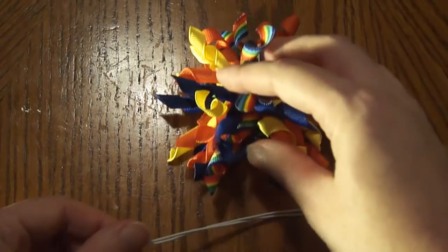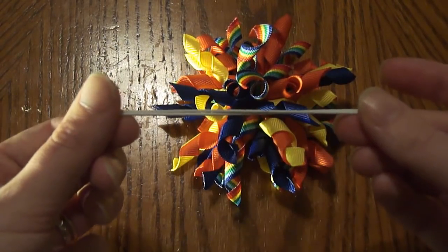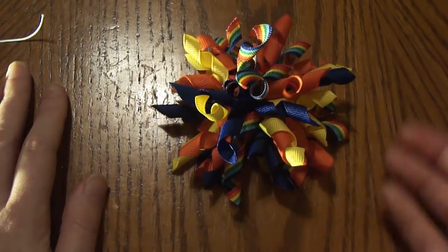And if you're happy with the size and shape of your corker, go ahead and cut off the rest of your elastic. And I'll show you how to put it on a clip.